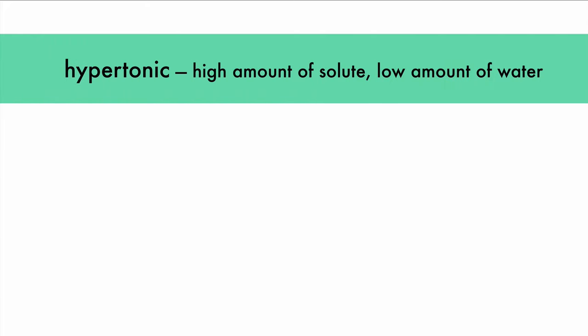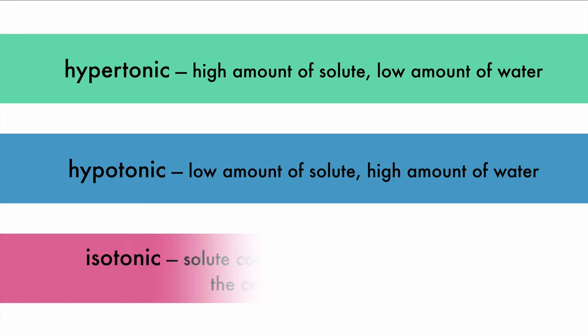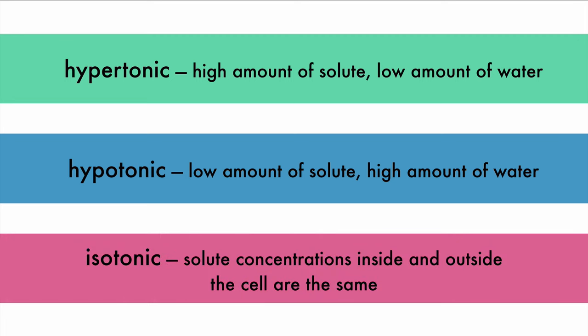Hypertonic means that there are relatively high amounts of solute and low amounts of water. You can think of a super-hyper kid and their high amounts of energy to remind you of the high amounts of solute in a hypertonic solution. Hypotonic means that there is a low amount of solute and high amounts of water. And isotonic means the solute concentrations inside and outside the cell are the same.